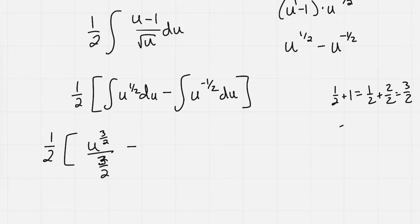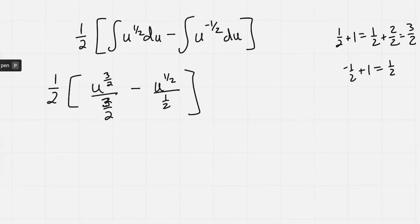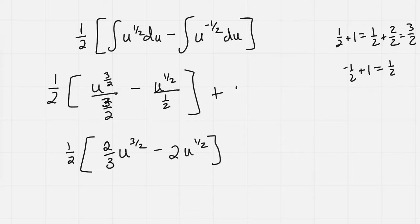Minus, and then negative 1 half plus 1 is going to be 1 half. So minus u to the 1 half all over 1 half. We could write that just out in front as 2. So I have 1 half times the quantity 2 thirds u to the 3 halves minus 2 u to the 1 half, and all of this plus c.